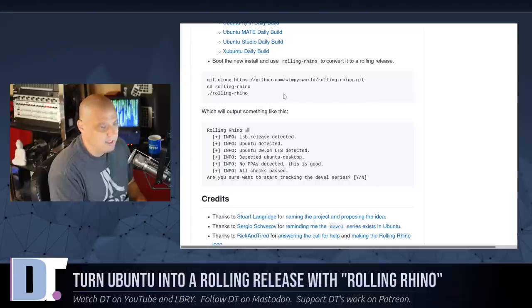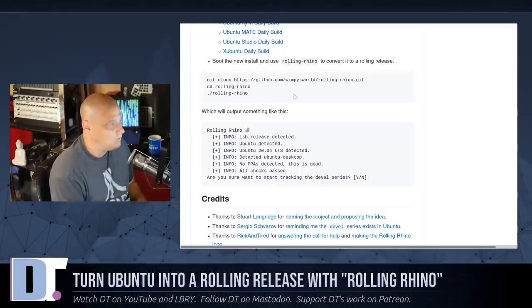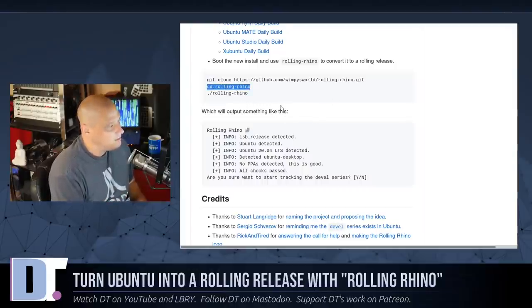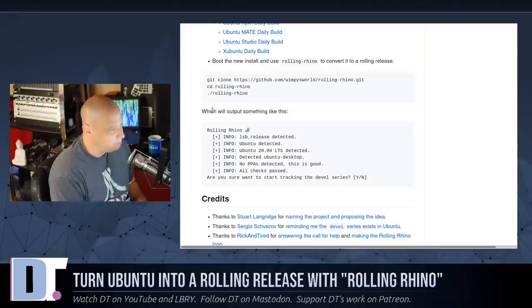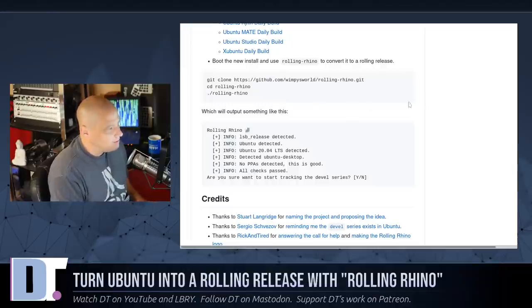I grabbed today's daily build, installed it inside VirtManager, and then to switch over to Rolling Rhino, we basically need to put three lines into the terminal. We need to run a git clone which clones the Rolling Rhino repository, then CD into the new Rolling Rhino directory that will be created on our system. Inside that directory will be the Rolling Rhino script which we then execute. Pretty simple process to get this working — at least it seems to be.